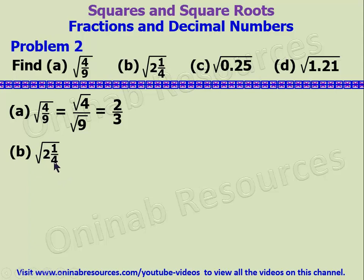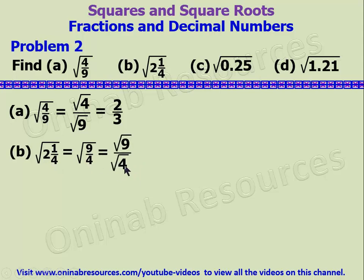For B, we are going to express this as an improper fraction. Expressing 2 whole number 1 over 4 as an improper fraction: 4 times 2 gives 8, plus 1 gives 9 over 4. Then we find the square root of 9 over the square root of 4, which gives 3 over 2. Expressing it as a mixed fraction, we have 1 whole number 1 over 2. That is the solution of problem 2B.